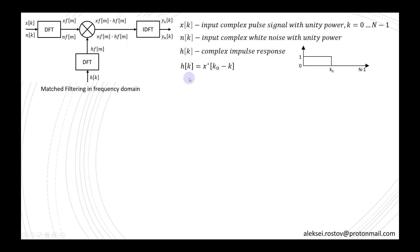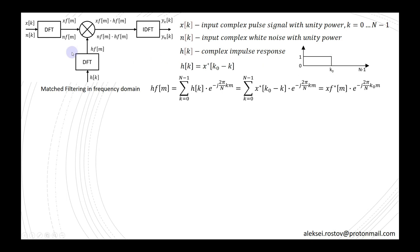According to the matched filter definition, the impulse response of the matched filter can be expressed as a conjugated version and shifted-in-time version of the input signal about time k0, where k0 means the length of the input signal. The discrete Fourier transform of the impulse response can be rewritten as the DFT of the time-shifted signal. By applying the time-shift theorem for DFT, I can get the conjugated version of the spectrum of the input signal with an additional phase factor whose argument equals the time shift value k0.